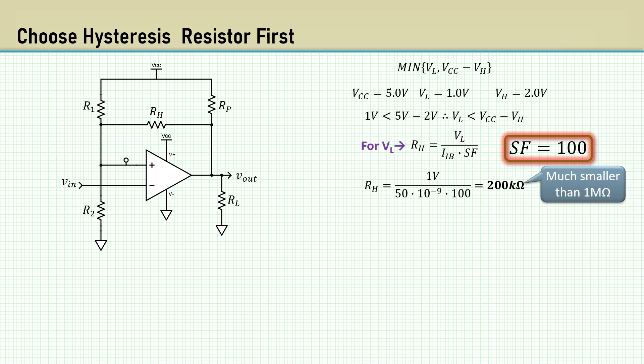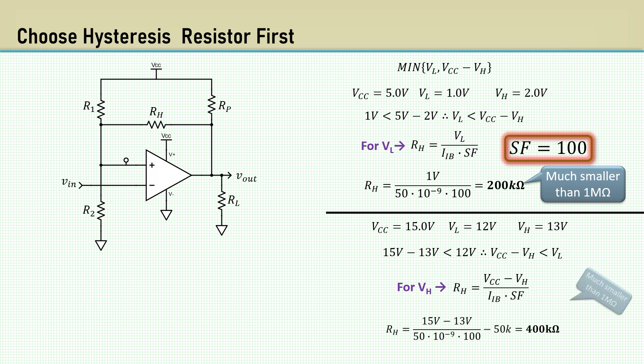Let's look at the opposite condition. A VCC of 15 volts, VL is 12 volts, and VH is 13 volts. 15 minus 13 is less than the VL at 12 volts. Using the voltage of VCC minus VH yields 400k, again, much smaller than 1 meg. This approach is applicable when the input bias current of the comparator is in the large range.